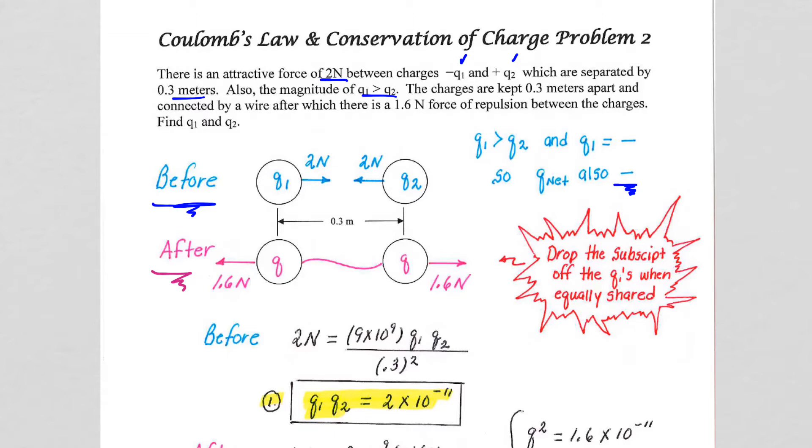We are told all of the before information, so we know the magnitude of the force. Again, when we use Coulomb's Law, we don't let the positive or negative come into play calculating the value. So we know that magnitude Q1 times Q2 from our Coulomb's Law force equation gives us 2 times 10 to the minus 11. So let's just box that and let that sit.